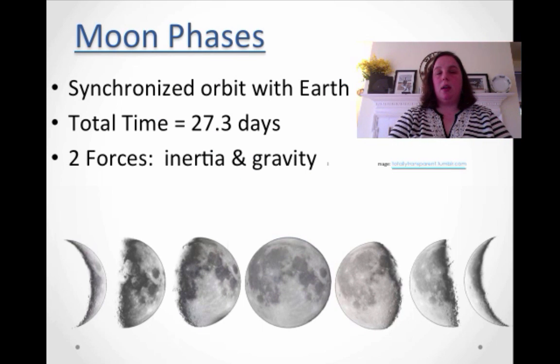All right, so let's talk about moon phases. Remember, we talked an awful lot about how the moon has a synchronized orbit with Earth. Remember, that just means you see the same side all the time. What's the total time of the moon's rotation? Well, it's 27.3 days, so about a month, give or take. And there's two forces that come into play with this, and this is inertia and gravity. So I hope you guys remember back to sixth grade.